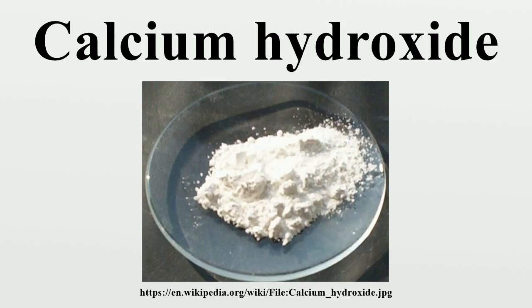Calcium hydroxide adopts a polymeric structure, as do the related hydroxides of the alkaline earth metals. The packing resembles the cadmium iodide motif with layers of octahedral Ca(OH)₂ centers. Strong hydrogen bonds exist between the layers. Calcium hydroxide is produced commercially by treating lime with water: CaO + H₂O → Ca(OH)₂. In the laboratory it can be prepared by mixing aqueous solutions of calcium chloride and sodium hydroxide.